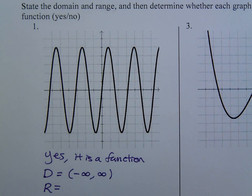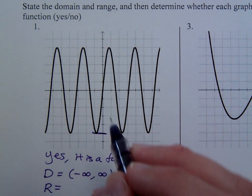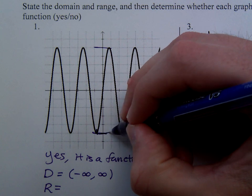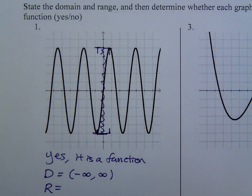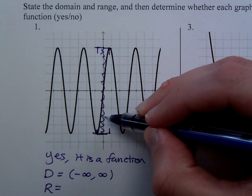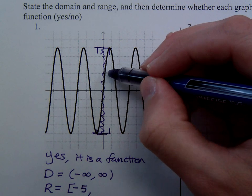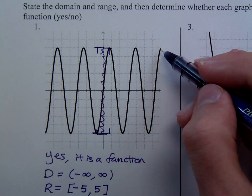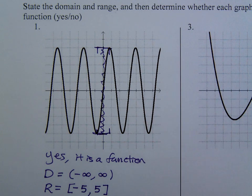And the range — notice there's a pattern going here. It just keeps bouncing back and forth. If you were to squeeze all of this onto the y-axis, you'd be including from the bottom going up to the top. This graph goes all the way down to negative five and all the way up to positive five. So the range is from negative five to positive five. So yes, it's a function, with domain all real numbers and range [-5, 5].